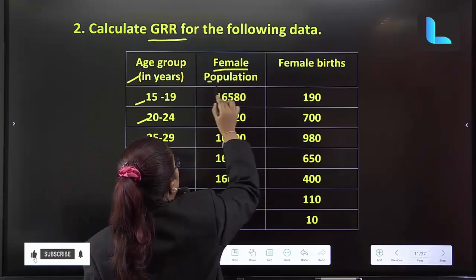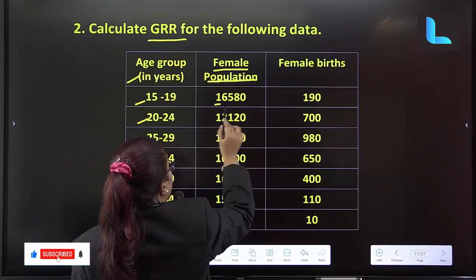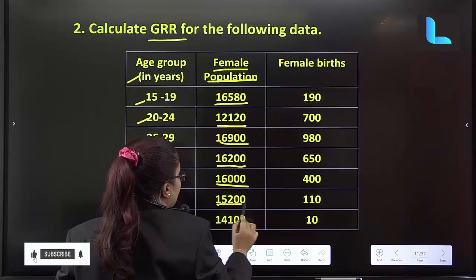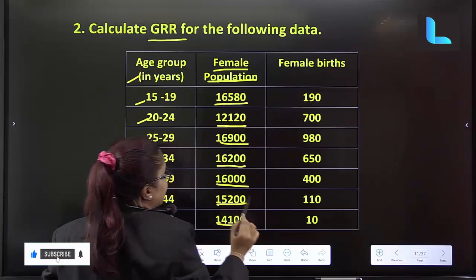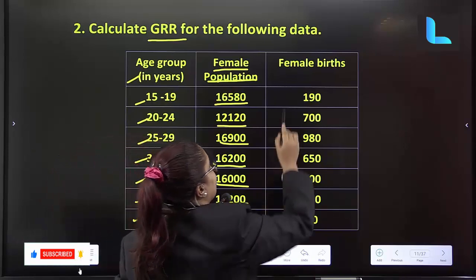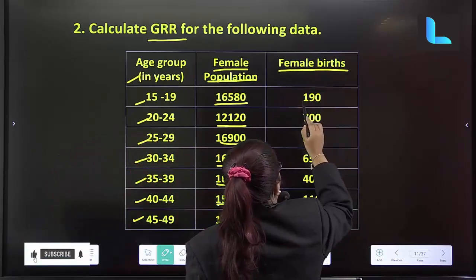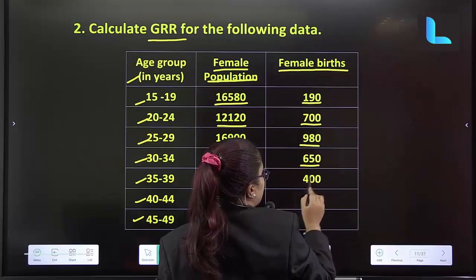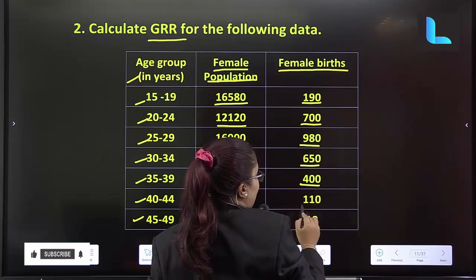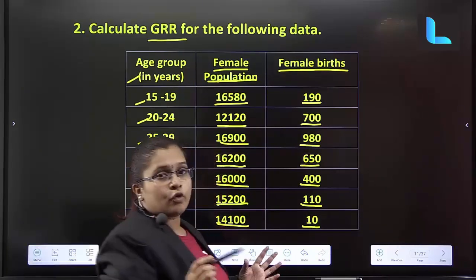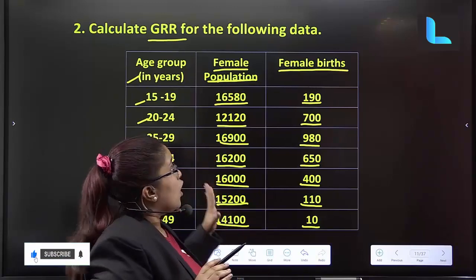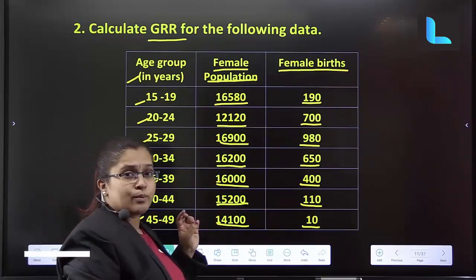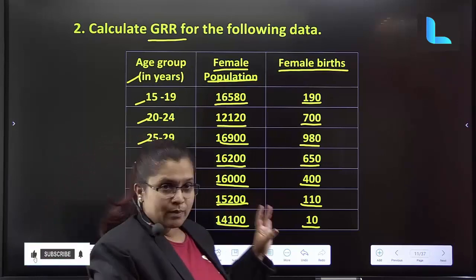Next, they have given the female population. What else have they given? Female births — that is, the female babies born. So the question has: age group, female population, and female births.